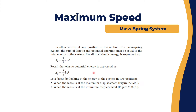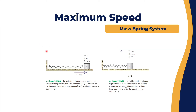If we look at the mass of the system at the maximum displacement and at the minimum displacement, at the maximum displacement the potential energy is at its max because the system is already charged with energy, ready to release and go back to the equilibrium position. The kinetic energy is zero because the system stopped at this point and the velocity is zero.